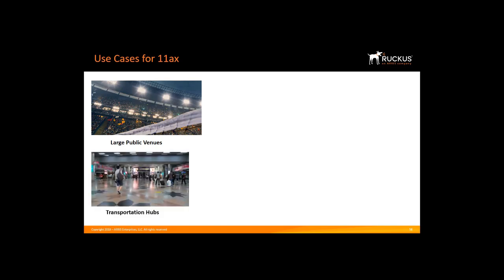Transportation hubs — public transportation stations — are also offering public Wi-Fi. Like stadiums, transportation hubs have high densities of people attempting to connect to the network simultaneously. However, these hubs face the unique challenge posed by transient devices that are not connecting to the Wi-Fi network but are still sending management traffic that congests it. The 11ax advancements with OFDMA and BSS coloring provide the tools to manage these challenges in dense environments.